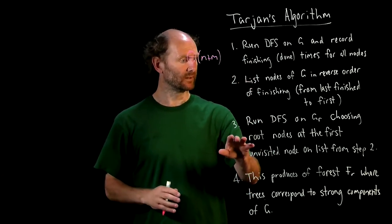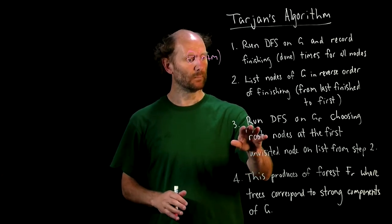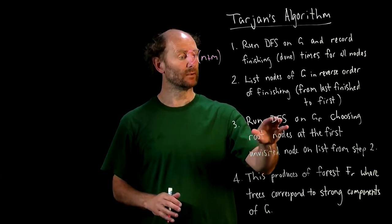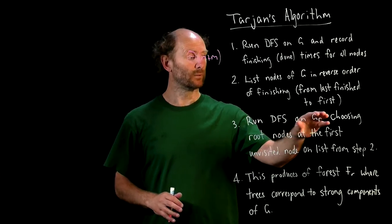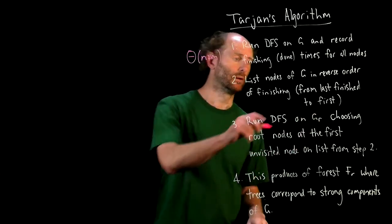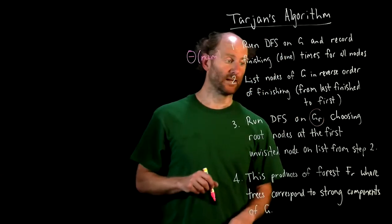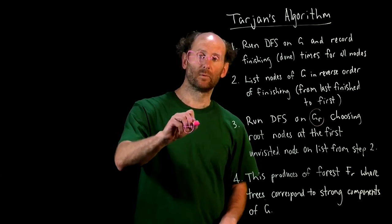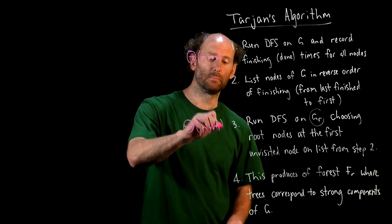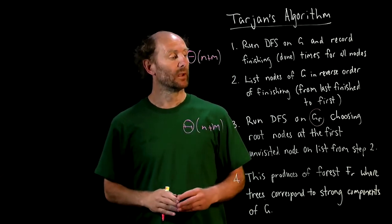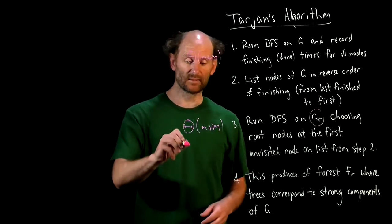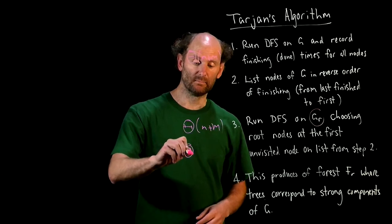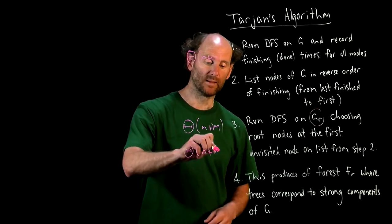This is just listing the nodes, so that's quick. We then need to run DFS on the reverse of G, which means we need to derive the reverse of G. It's easy to see that that's also order N plus M to get the reverse,